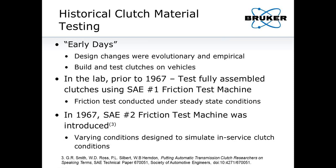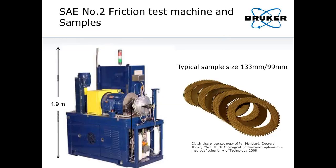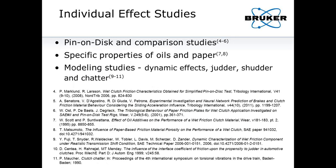More recently, in the last 30 or so years, there have been more individual effect studies — pin-on-disc studies, block-on-ring studies comparing results to the SAE Number Two. People have looked at specific properties of individual elements: oils, paper porosity, fiber type. There have also been many modeling studies looking at dynamic effects — judder, shudder, and chatter — all of which are correlated with a negative slope of the coefficient of friction.